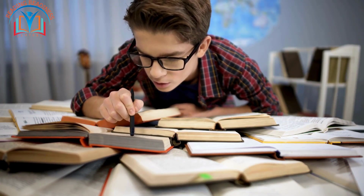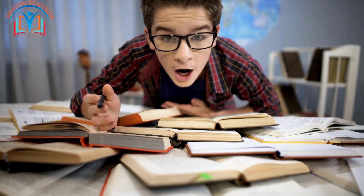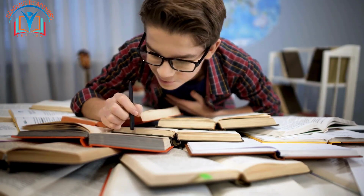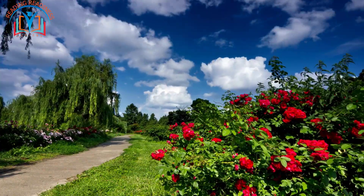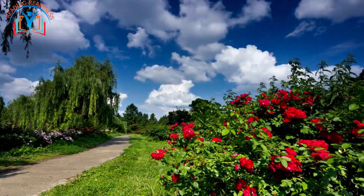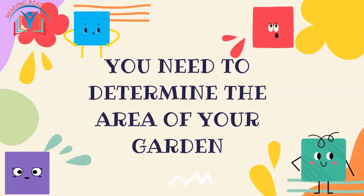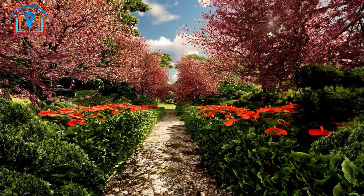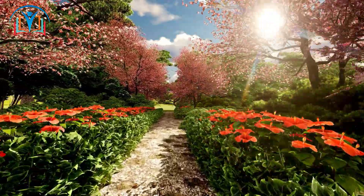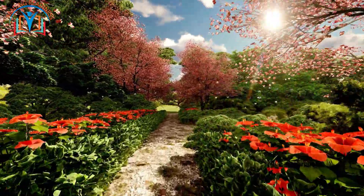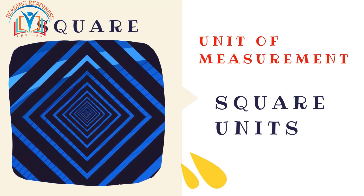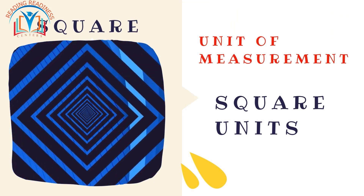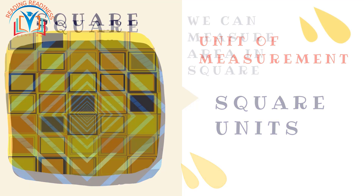First on our journey are squares — those symmetrical wonders that can turn any ordinary space into a magical garden of knowledge. Imagine you have a beautiful garden filled with vibrant flowers. If you want to know how much space your flowers occupy, you need to determine the area of your garden. Its unit of measurement is square units, which are like tiny squares that fit perfectly together without any gaps.